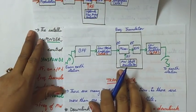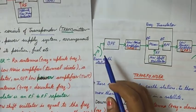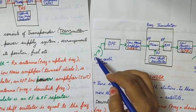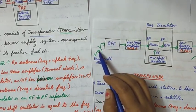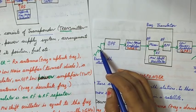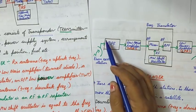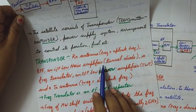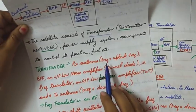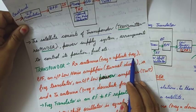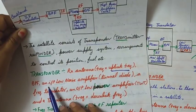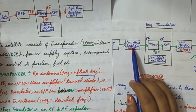The block diagram of the transponder is shown here. It consists of a receiving antenna, because the transponder on the satellite must receive the signal from the earth station. The signal is received by the transponder and passed through a bandpass filter to make the signal precise. It is then passed to a low noise amplifier — a tunnel diode — and the receiving antenna is tuned to the uplink frequency, the same frequency at which the signal was transmitted.